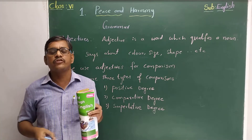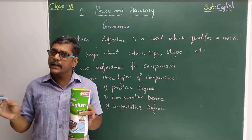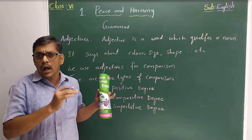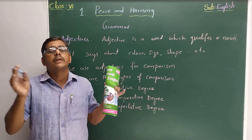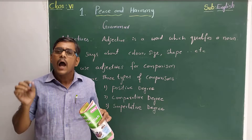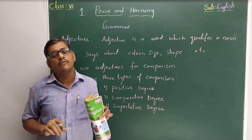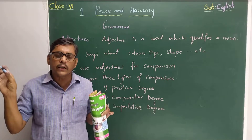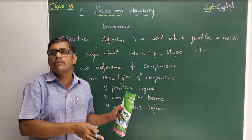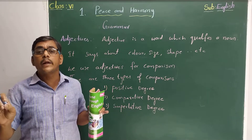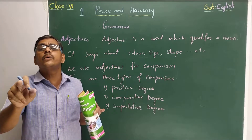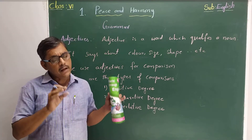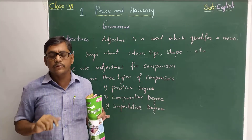After adverb we come to preposition. Preposition is a word that connects the noun to other parts of the sentence. For example, 'I am going to school.' Here 'school' is the noun. That noun 'school' is connected to the remaining part of the sentence, which is 'I am going.' Where am I going? I am going to school. So 'to' is the preposition — it is used to connect the noun to other parts of the sentence.